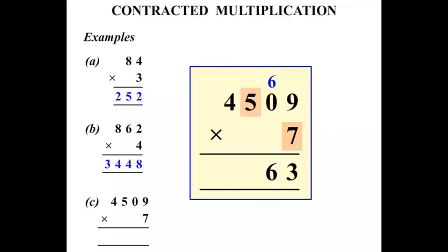7 times 5 is 35. So we put the 5 down and carry the 3. 7 times 4 is 28, plus 3 more is 31. And there's no further calculation, so let's write the 31 there. So the answer there, 31,563.